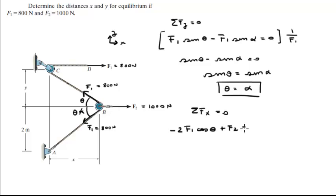Plus F2 is equal to 0, and you just replace F1 by 800 cosine of theta plus F2, and F2 you replace it by 1000, is equal to 0. So as you can see you only have one variable in this equation, you solve for it and you get that theta is equal to 51.3 degrees.